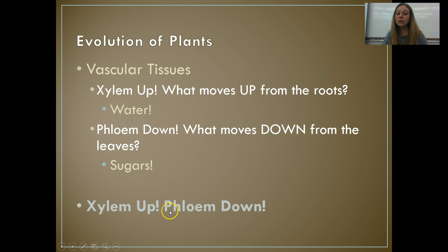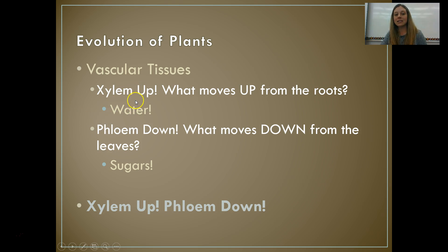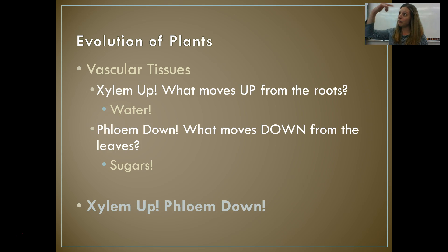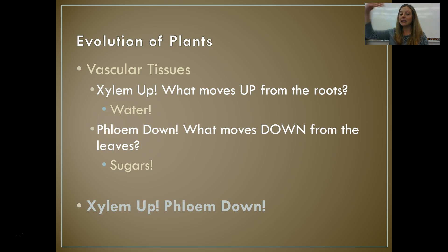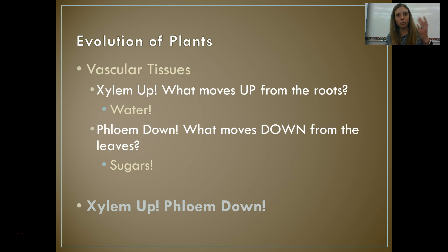Xylem up, phloem down. Xylem is the vascular tissue responsible for moving water up through the plant. Phloem is the vascular tissue responsible for moving materials down the plant. What moves down from the leaves? The leaves capture sunlight — that's where most photosynthesis happens — and the point of photosynthesis is to make sugar, to make glucose. So phloem flows the sugars made from photosynthesis down. Xylem: water up; phloem: sugars down.